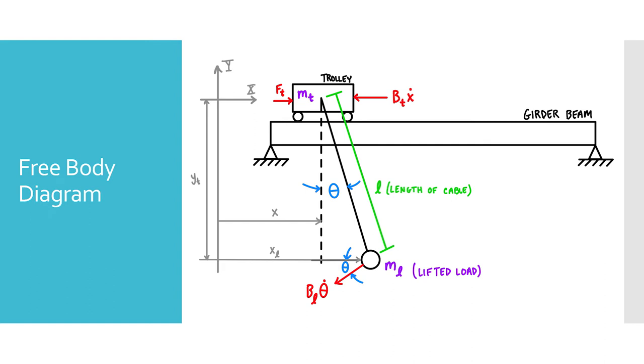The free body diagram considers the mass of the trolley, MT, and the mass of the load, ML. Forces acting on the system include the trolley control force, FT, the frictional force between the trolley and the girder, BT times X dot, and the frictional air resistance on the lifted load, BL times theta dot.